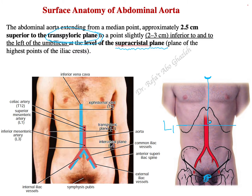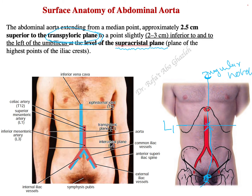The distance from the symphysis pubis up to the transpyloric plane equals the distance from there to the jugular notch, so it is the midway between the jugular notch and the symphysis pubis. Alternatively, some prefer a shorter reference: the transpyloric plane is also the midway between the xiphoid process and the umbilicus.